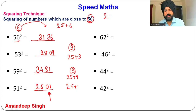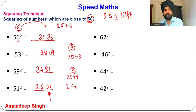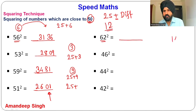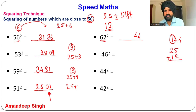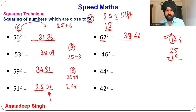If the number is less than 50, subtract the difference from 25 instead of adding. For 62²: it is 12 more than 50. 12² = 144 — write 44 at the end and carry 1. 25 + 12 = 37, plus the carry of 1 = 38. So 62² = 3844.